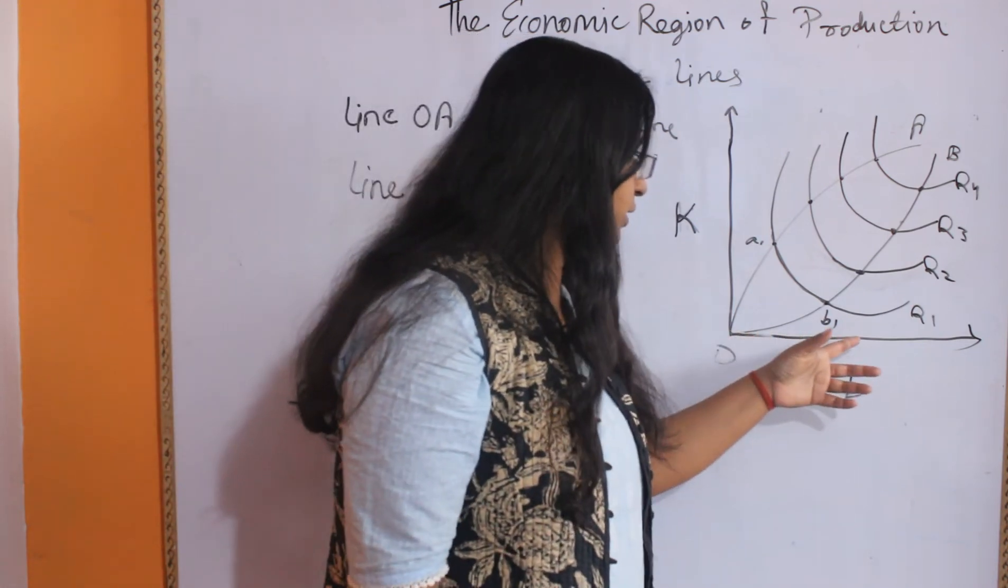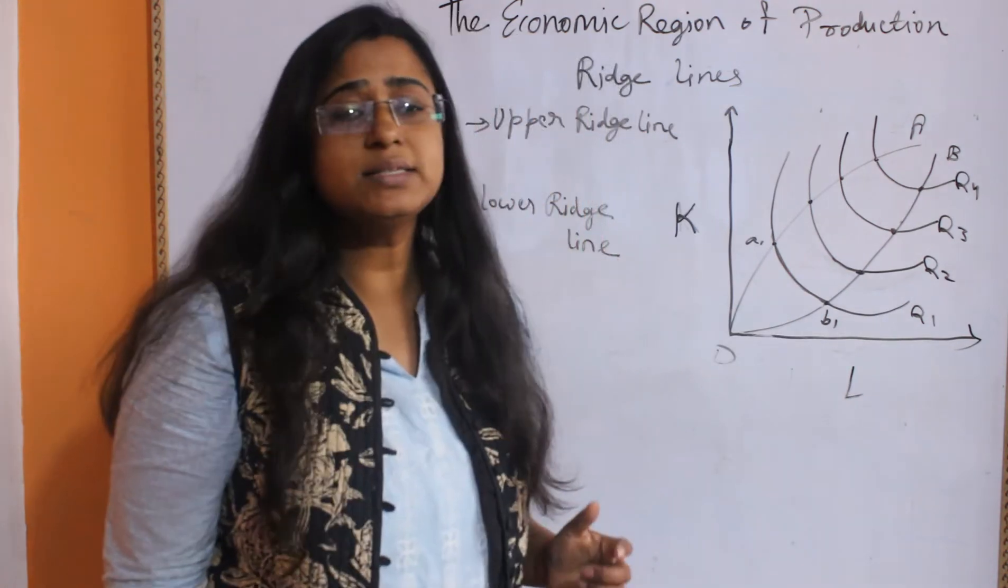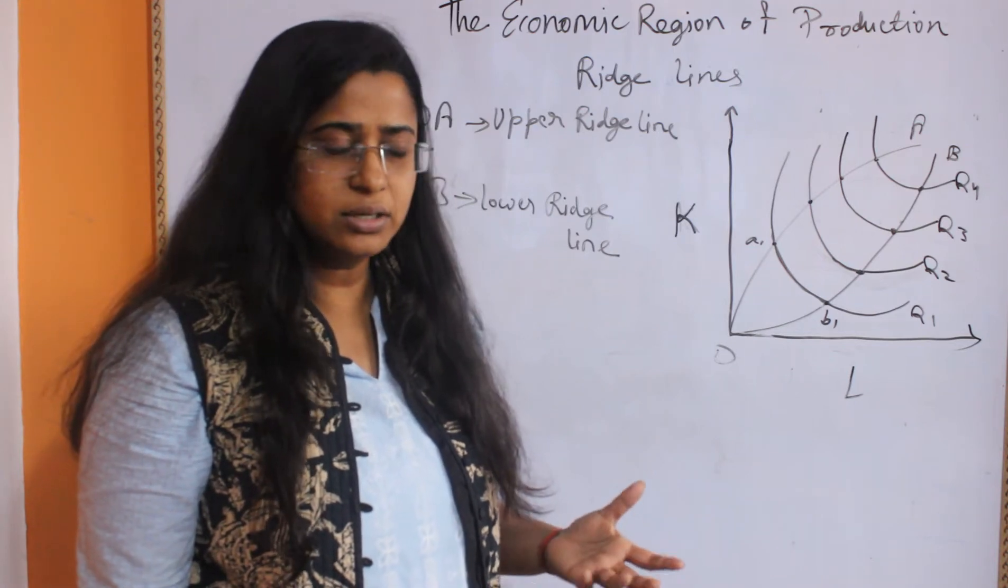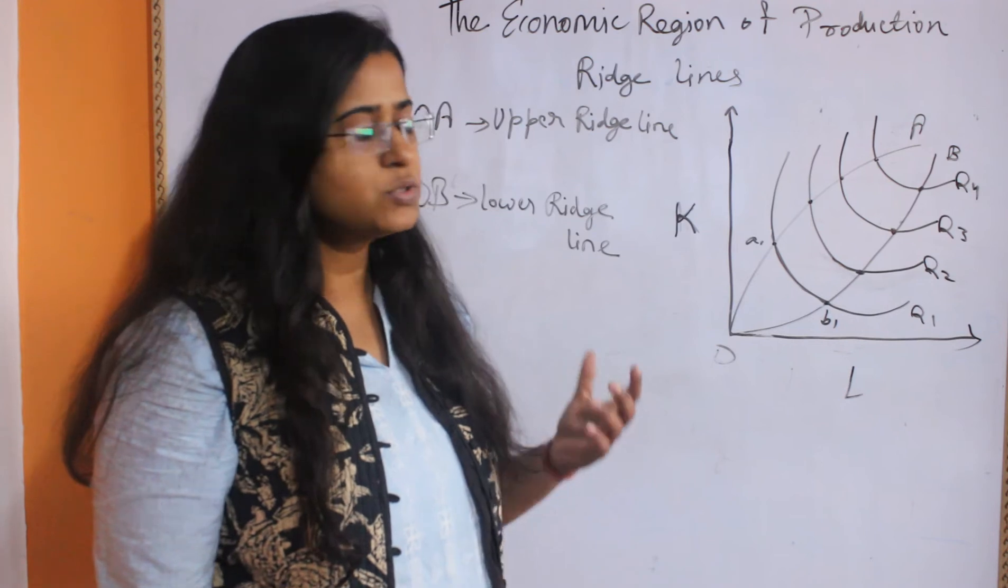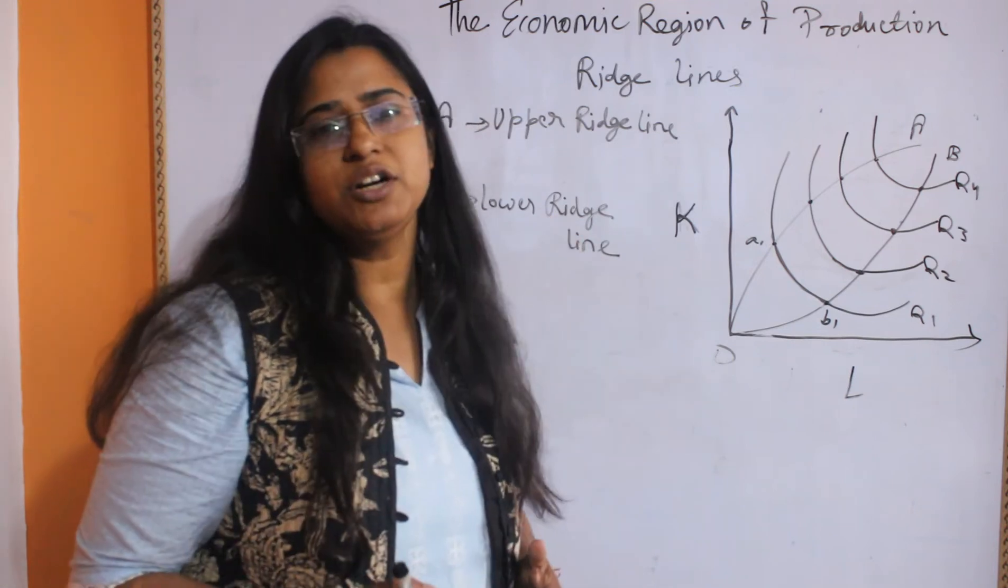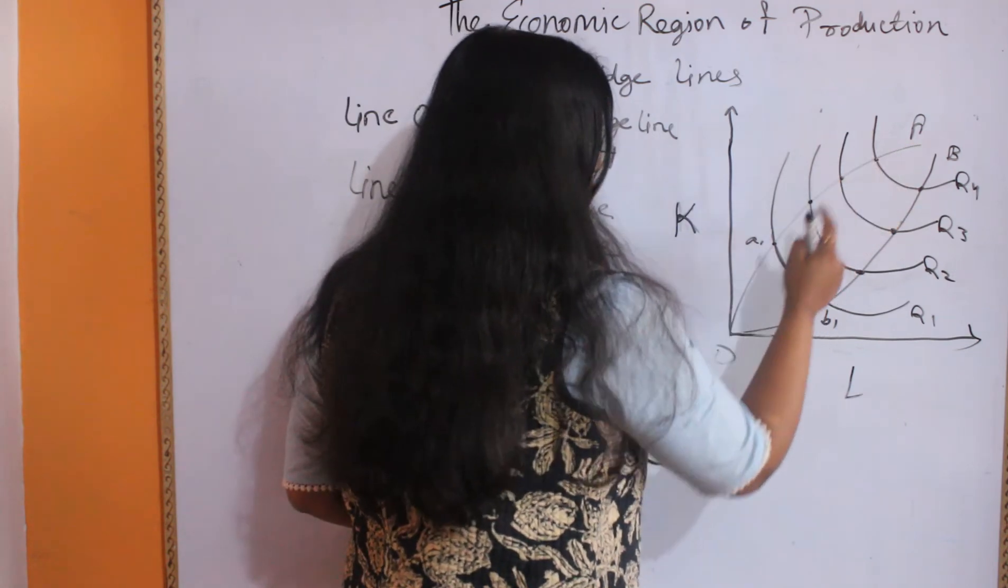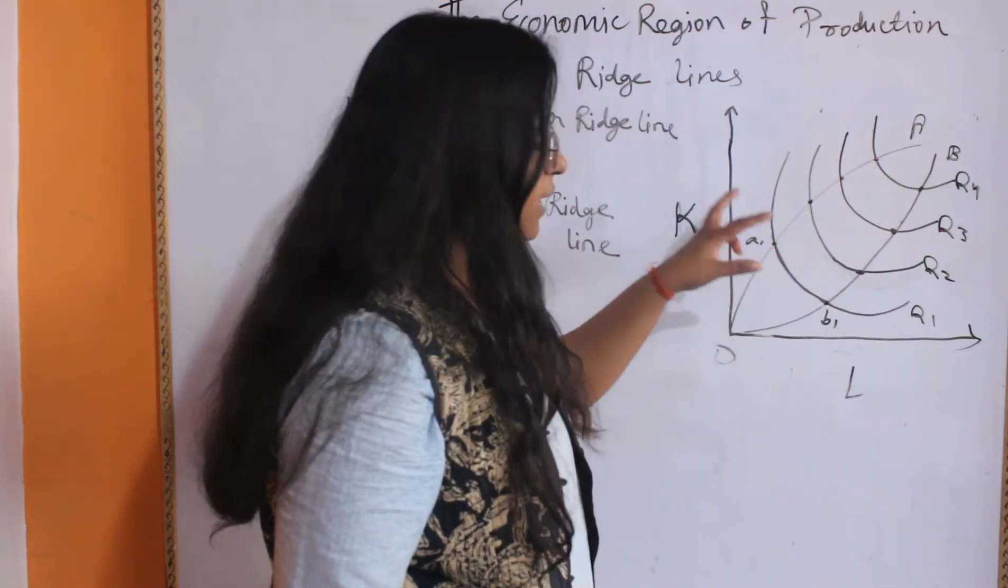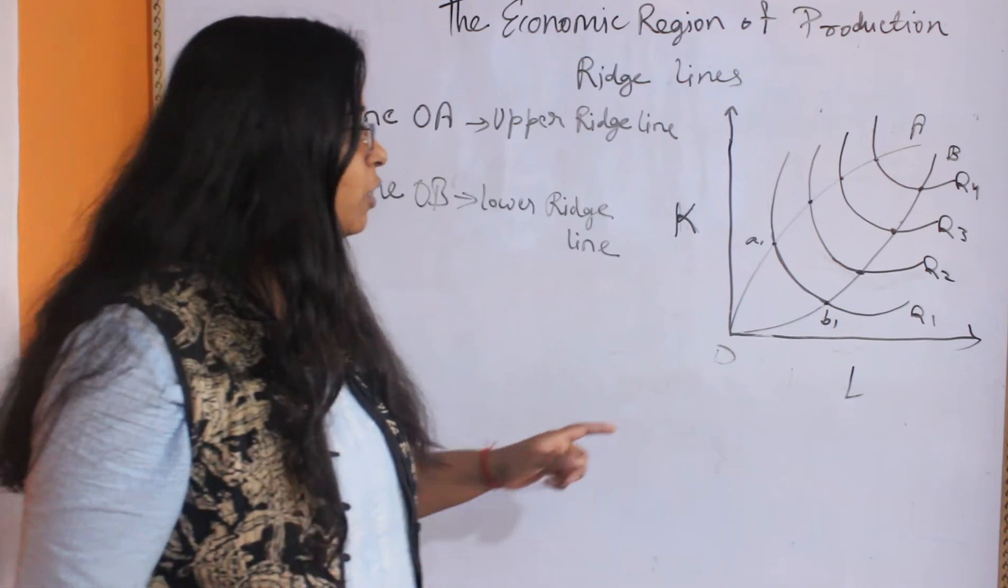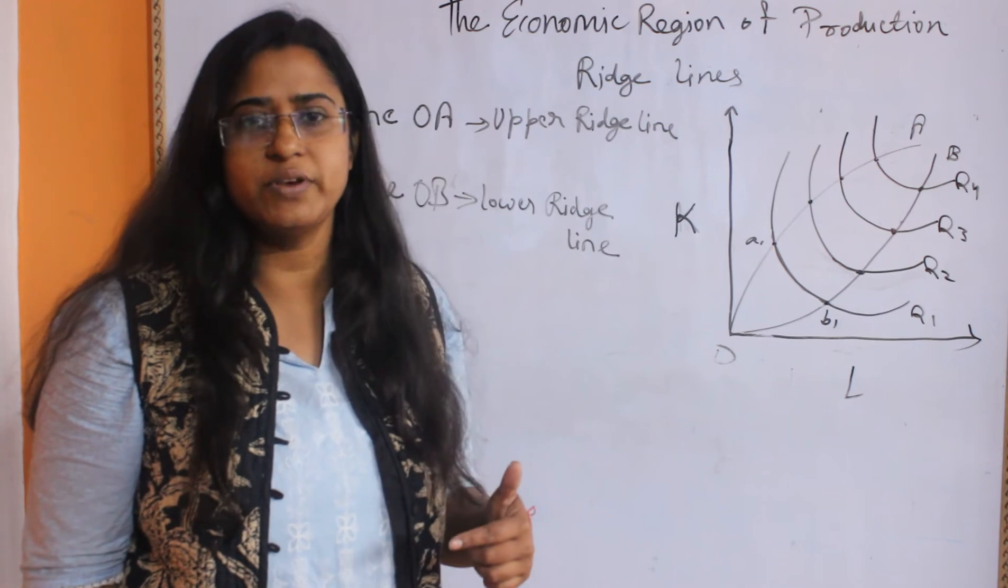Below this point B1, the increased amount of labor is adding nothing to, or rather decreasing, the level of output. So the feasible region or the economic region or the efficient combination of factors of production lies within these two ridge lines and encircles the convex portion of the isoquant on which the slope of the isoquant is negative and convex to the origin.